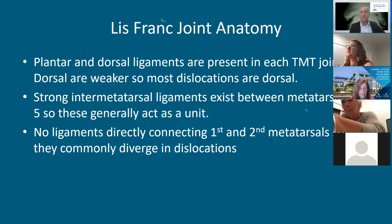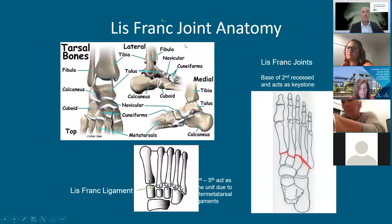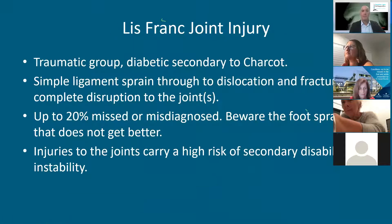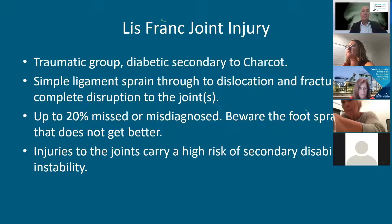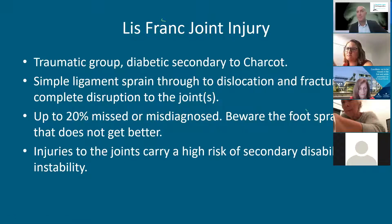The second to fifth metatarsals have very strong ligaments joining them, so when they dislocate they tend to go as a unit, mainly laterally. There are no ligaments directly connecting the first and second metatarsals, so they commonly diverge — the first going dorsally and the second to fifth going laterally. Here's the anatomy: these are the Lisfranc joints and ligaments. You have to disrupt all of these ligaments for the whole unit to go. Injuries to these joints carry a very high risk of secondary disability and instability if missed, so identifying them is a really important find for the patient.